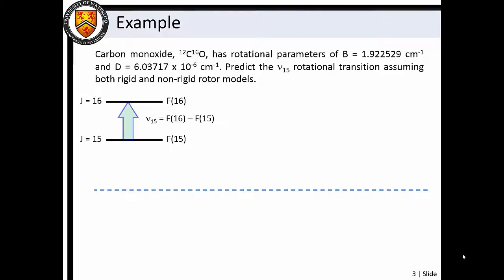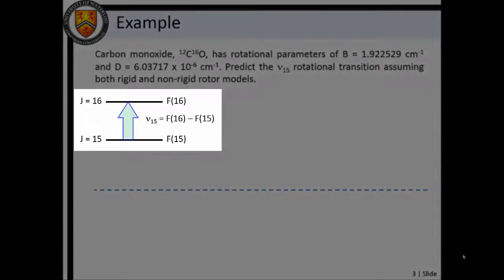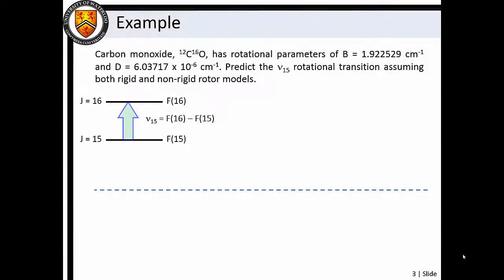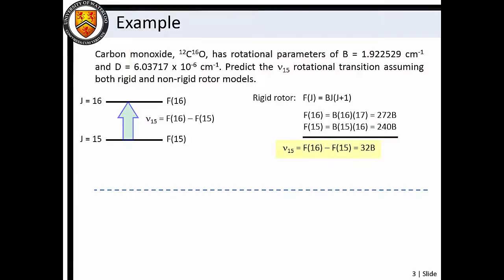If we are interested in the ν₁₅ transition, we must calculate the energy difference between the J = 15 and J = 16 rotational energy levels. Using our rigid rotor expression, we see that the ν₁₅ transition equals 32B. We also arrive at this value using the rigid rotor transition expression. Substitution then yields a value of 61.52093 cm⁻¹ for ν₁₅.